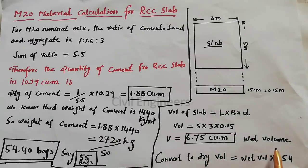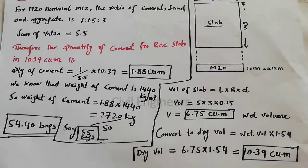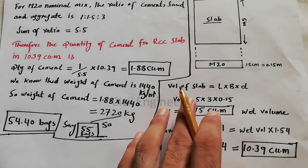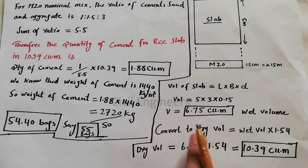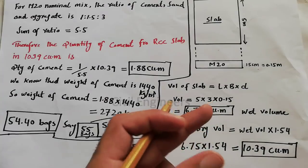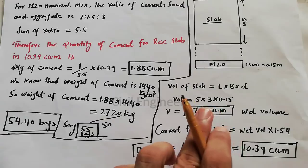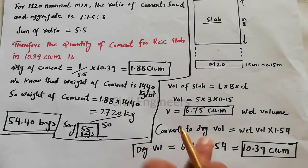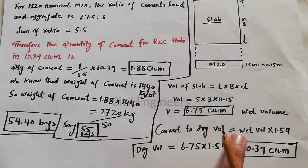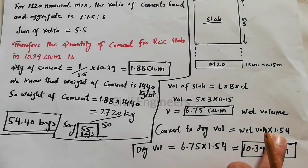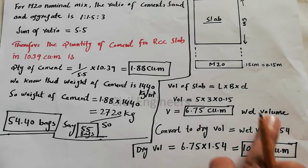But remember this is wet volume. Now we will convert it to dry volume because we bring from the market dry material. We bring cement, sand, and aggregate dry, not wet. We have to convert it to dry volume. Dry volume equals wet volume multiply 1.54, so it increases 54 percent of wet volume.